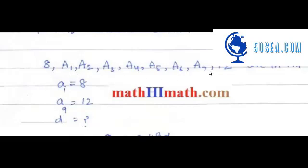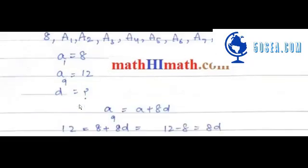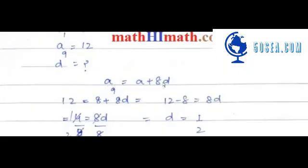We have not done this difference yet, so to find a9, a9 is equal to a1 plus 8d. So a9 is equal to a1 plus 8d. You have to place a1 which is 8, so 12 is equal to 8 plus 8d.